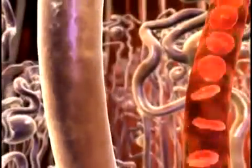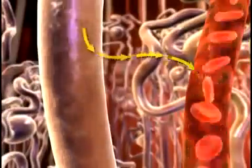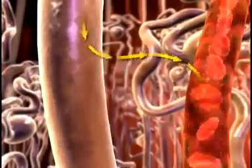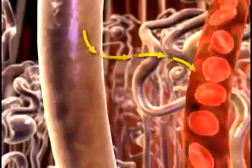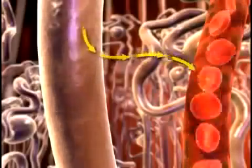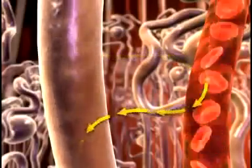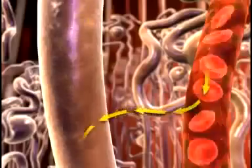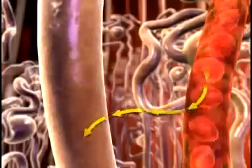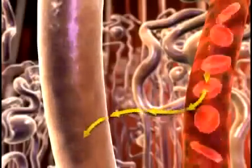Here, through tubular reabsorption, electrolytes and nutrients move from the filtrate back into the bloodstream. Here also, through tubular secretion, substances move from the peritubular capillaries into the urine filtrate.